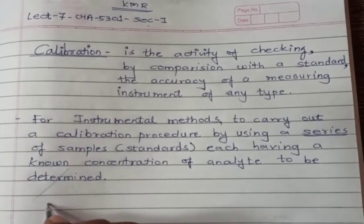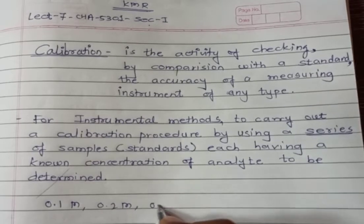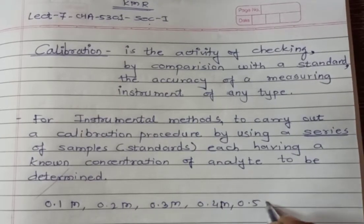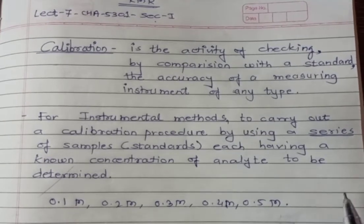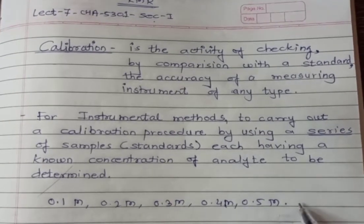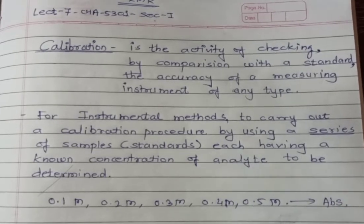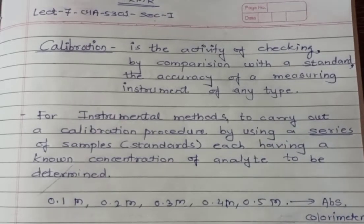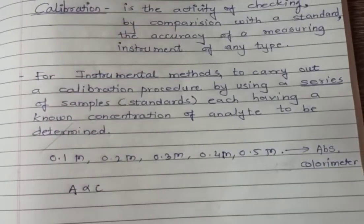Suppose 0.1 molar, 0.2 molar, 0.3 molar, 0.4 molar, and 0.5 molar solutions are prepared by you, and you have to measure the absorbance of each solution on the colorimeter. As you people know, the absorbance is directly proportional to concentration.